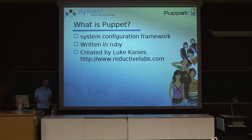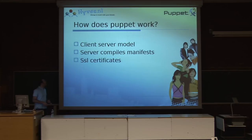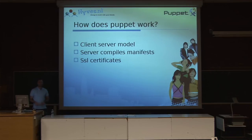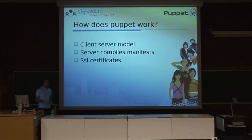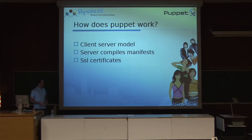Much of the deeper info is available at Reductive Labs. I just want to show you how Puppet works. It's a client-server model, so you have a central server where all your Puppet code lives. All the clients connect to it, the server compiles your manifest, makes sure it's unique for your host, and then the client receives it, executes it, and makes sure it gets run properly.